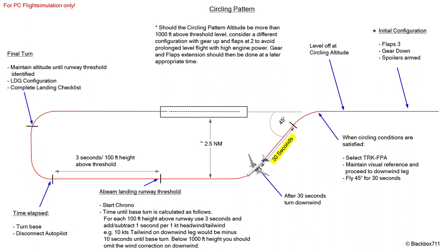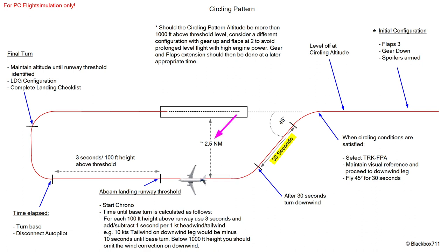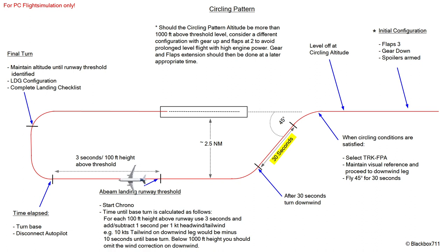This track will be flown for 30 seconds, and then we'll turn again to the outbound track. Those 30 seconds will give you approximately two and a half miles lateral offset from the runway. Next up is the beam landing threshold position — there we have to start the chrono to have timing available for the outbound leg. Normally you have three seconds per 100 feet height above the landing threshold; in our case 1,400 feet, which equates to 42 seconds.